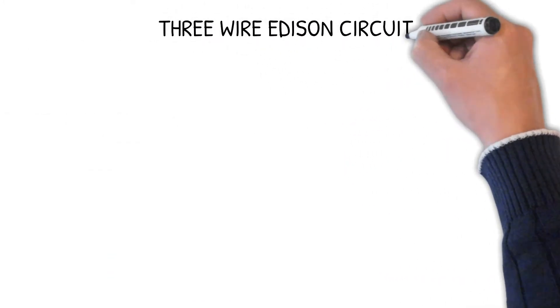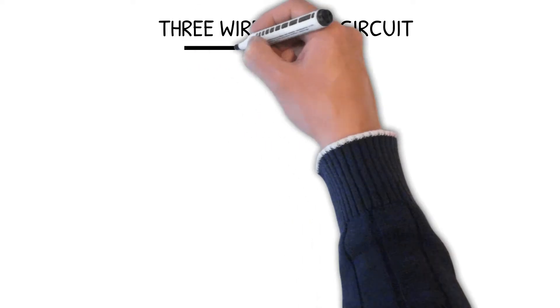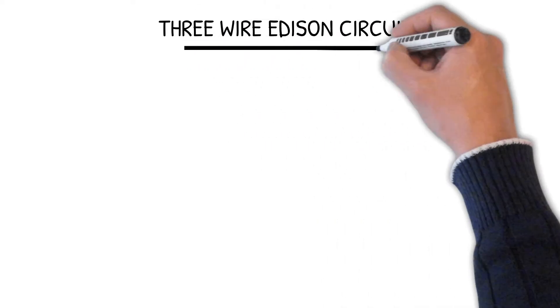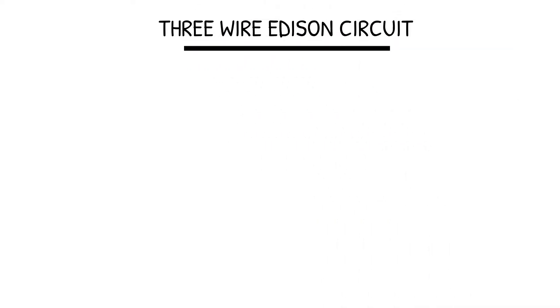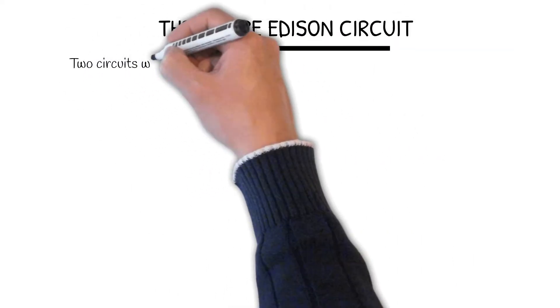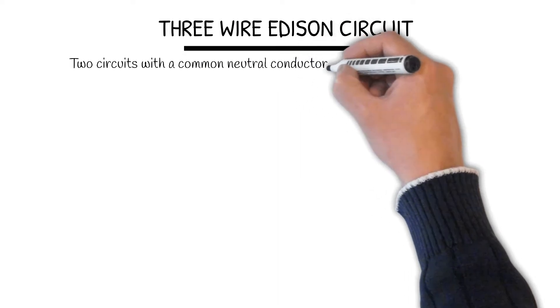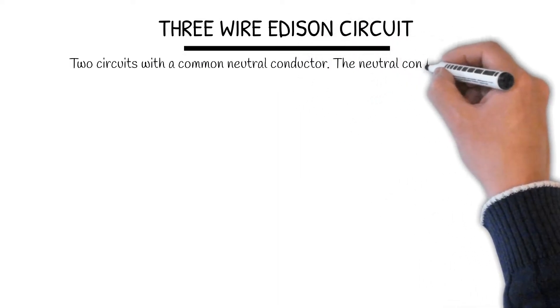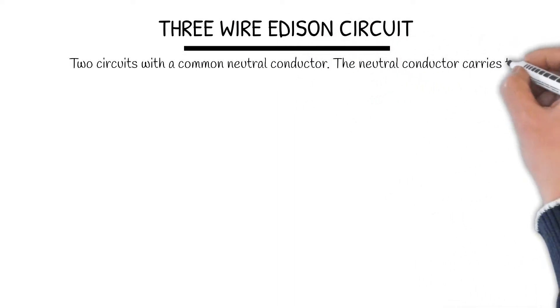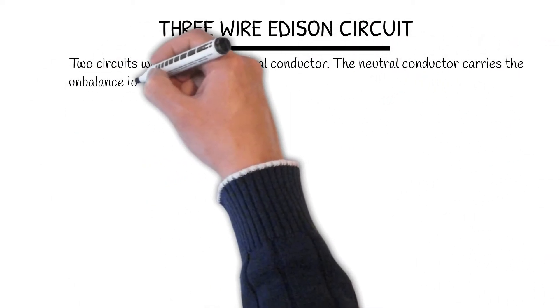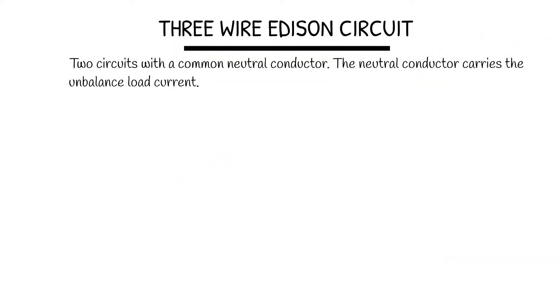The 3-Wire Edison Circuit consists of two circuits with a common neutral conductor. The neutral conductor carries the unbalanced load current.